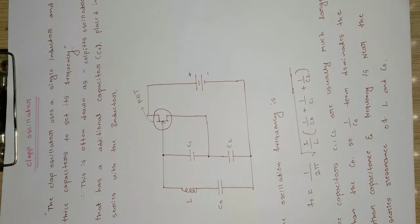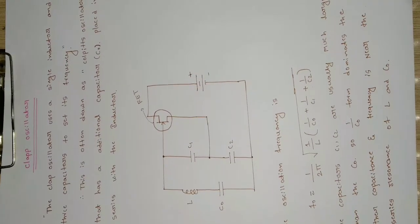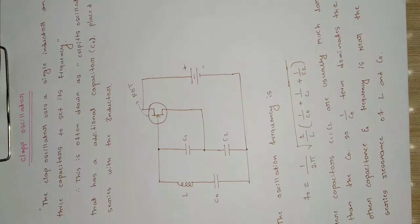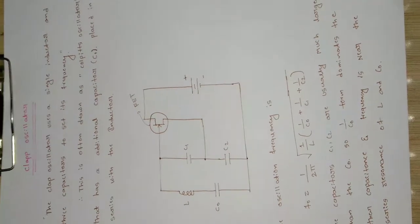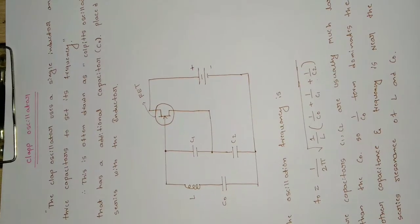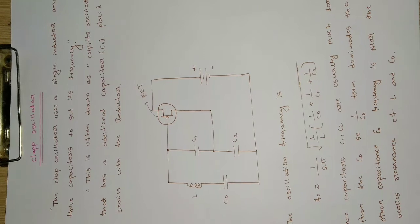In the case of the Colpitts oscillator, the output frequency is fluctuating. To make it stable, we are using an extra capacitor C0 in the circuit to maintain the frequency at a point. This is often drawn as a Colpitts oscillator that has an additional capacitor C0 placed in series with the inductor.